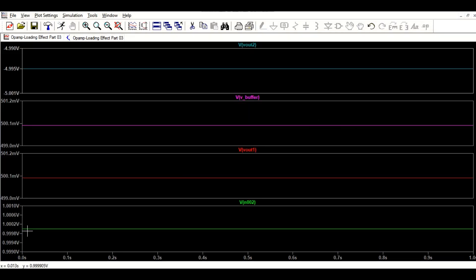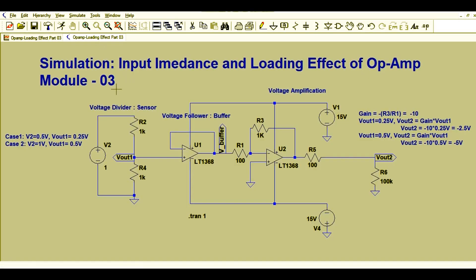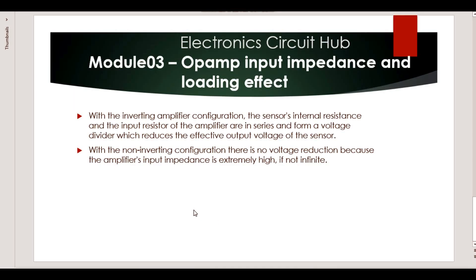There is no loading effect because a buffer is connected between the sensor and the inverting amplifier. The reason is that with the inverting amplifier configuration, the sensor's internal resistance and the input resistance of the amplifier are in series, forming a voltage divider that reduces the effective output voltage of the sensor — causing the loading effect.